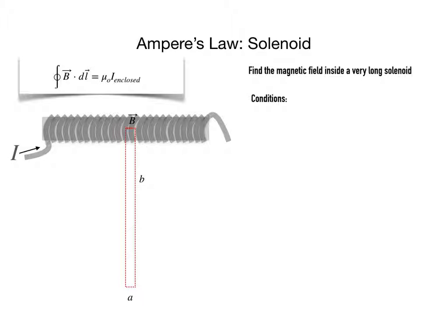Let me mark the sides of this rectangle as a and b and I will set up two conditions. First, a will be sufficiently small so that as I move across that side the value of the magnetic field doesn't change. And b on the other hand will be sufficiently large so that as I move away from the solenoid all the way across side b, the magnetic field is practically zero on the other end.